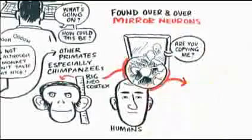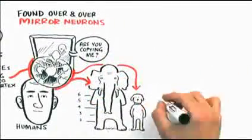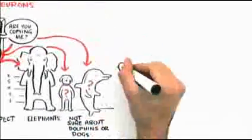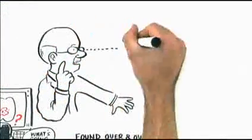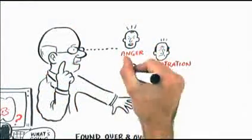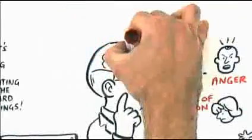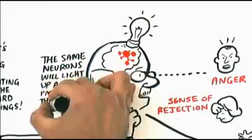They began to put MRI brain scanning machines on other primates, especially chimpanzees with our big neocortex, then humans. What they found over and over again is something called mirror neurons. We are apparently softwired so that if I'm observing your anger, your frustration, your sense of rejection, your joy, whatever it is, and I can feel what you're doing, the same neurons will light up in me as if I'm having that experience myself.